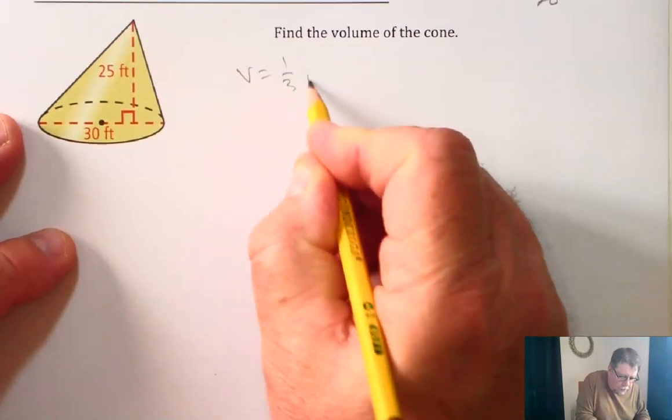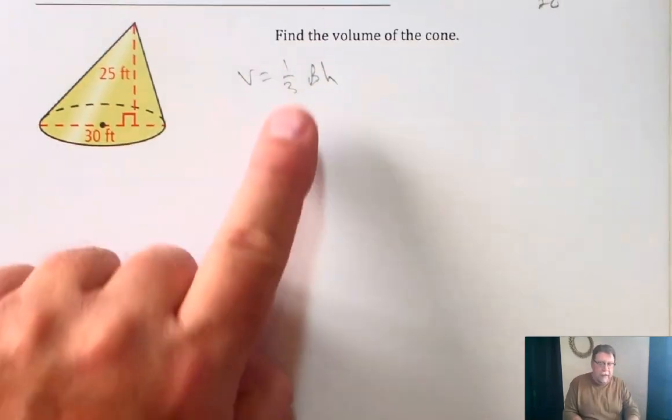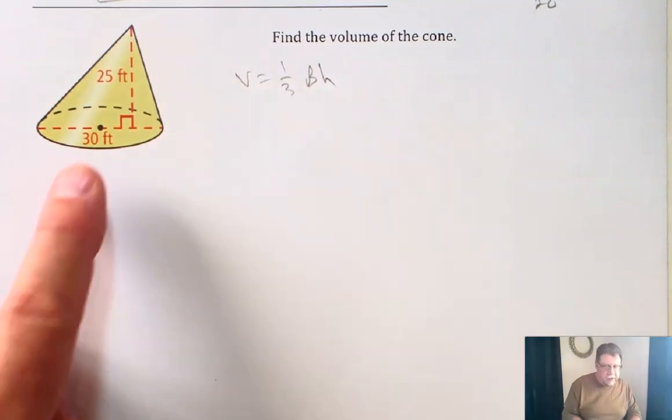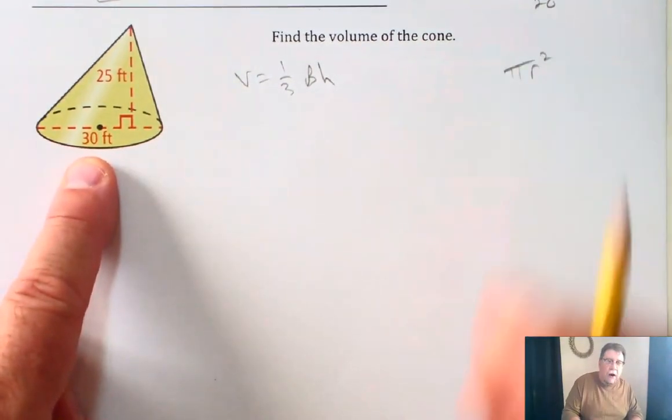Volume equals one-third capital B times H. Capital B stands for the area of the base. This is a circle, so we're going to use pi r squared.